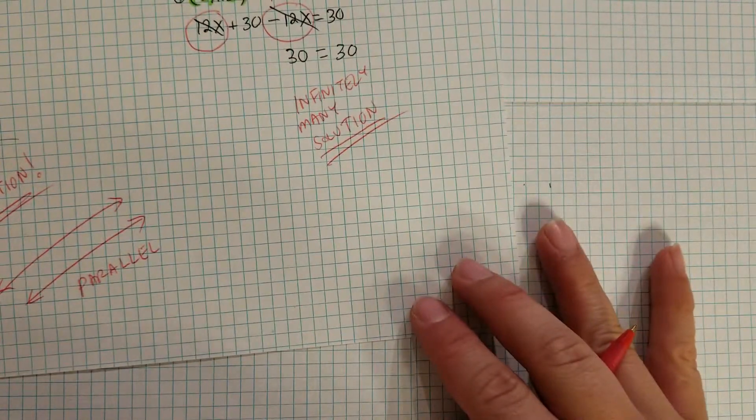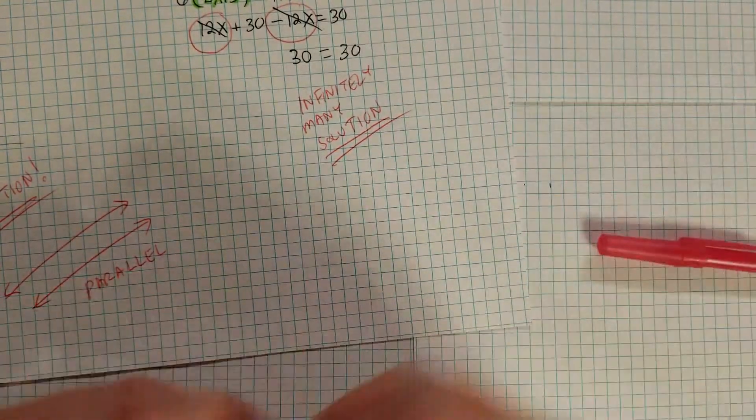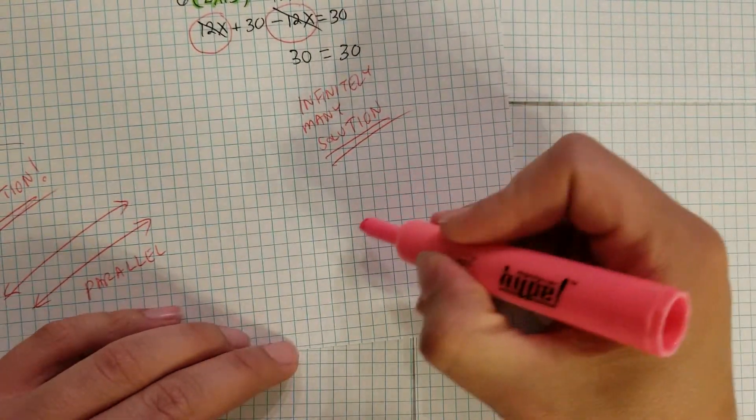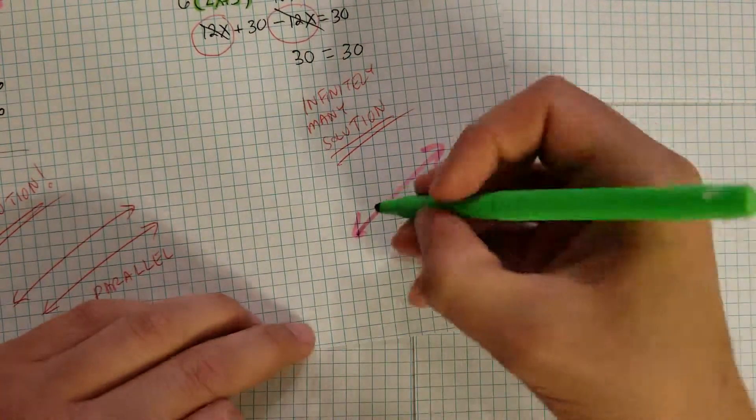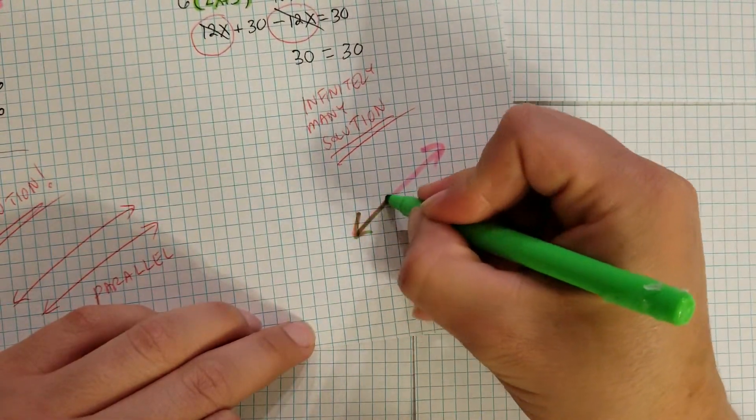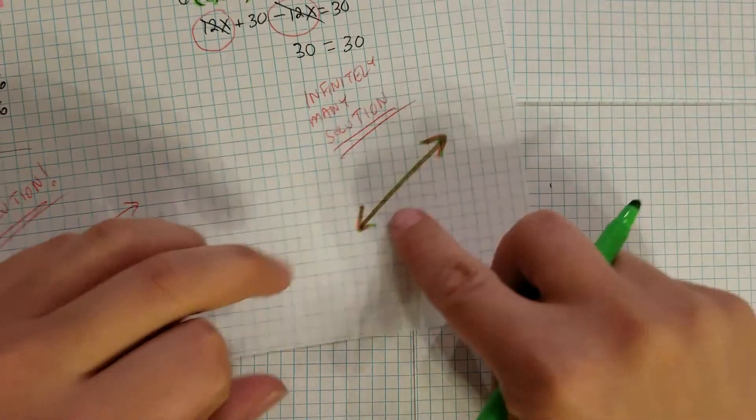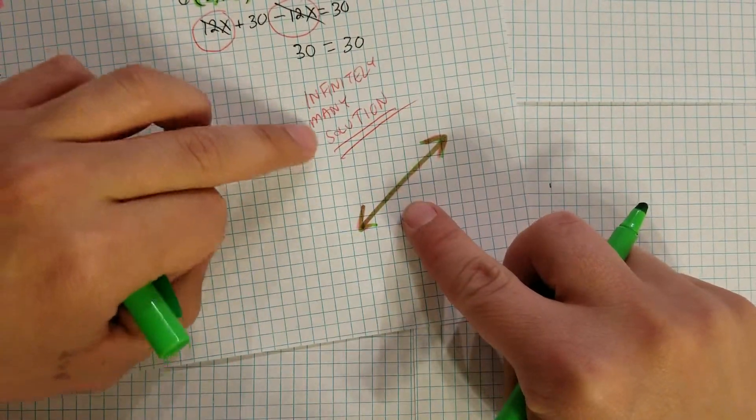Now if you have infinitely many solutions, all that means is it's the exact same line. So if I graph a line, and then I graph the exact same line on top of it, how many times is this line going to touch? Well, it's always going to touch. Therefore, it's infinitely many solutions.